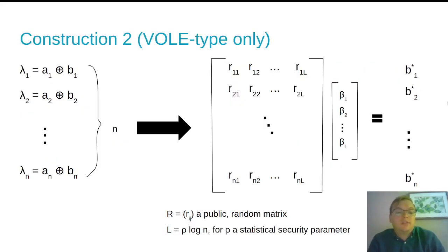So in the standard construction, B generates N distinct wire masks for each of the N AND gates. Here we generate only L, capital L, where L is a small parameter based on the statistical security parameter, and then generate all of the remaining wires as a public linear combination of the truly independent wire values.